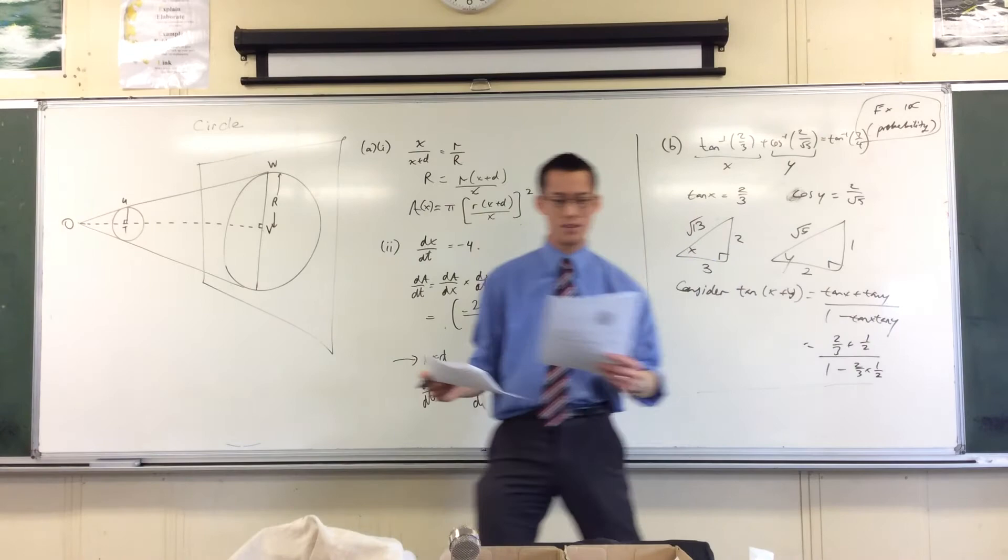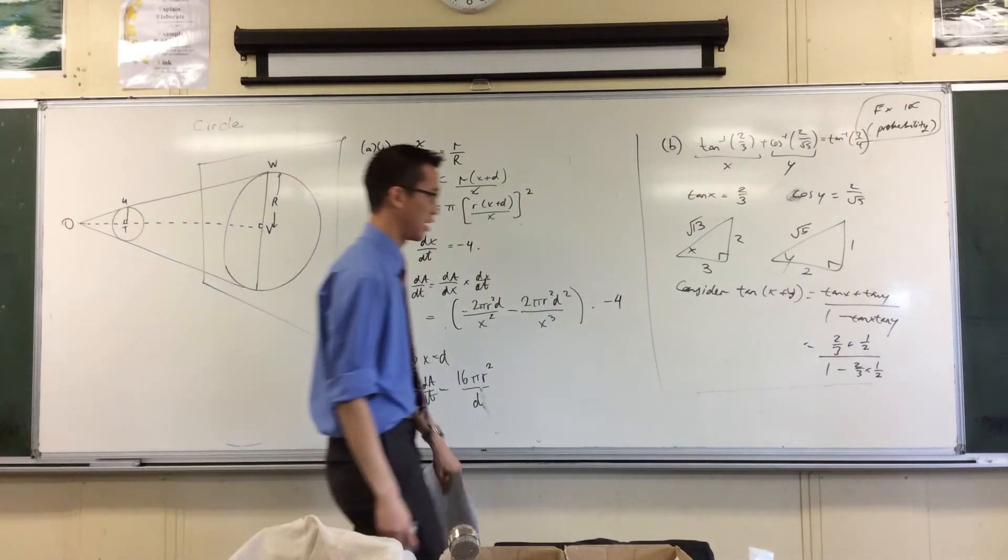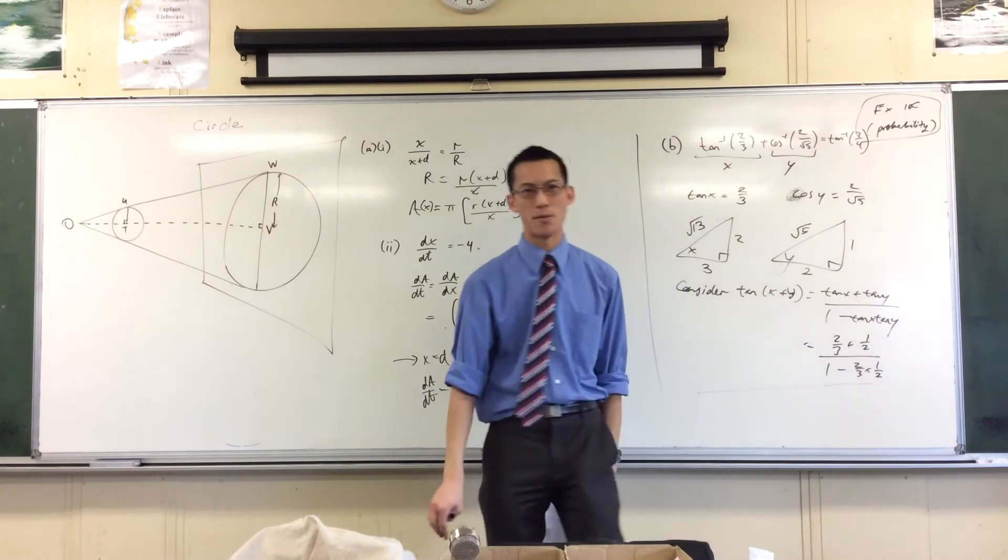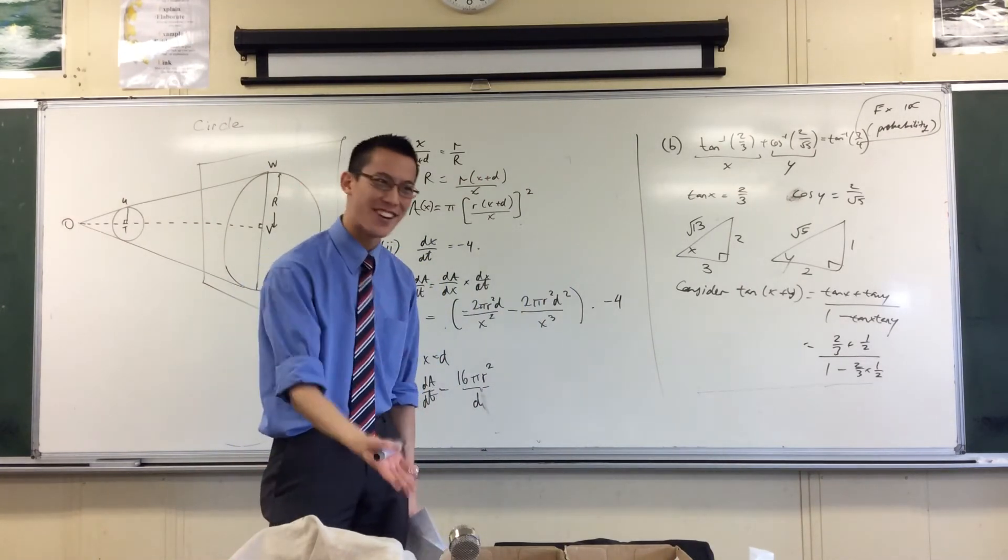This is a proof question, just like so many of them are, there are three marks devoted here. So you can't simply say at this point, I know this is going to be 7/4, even though it is, that's cheating, you have to show it.